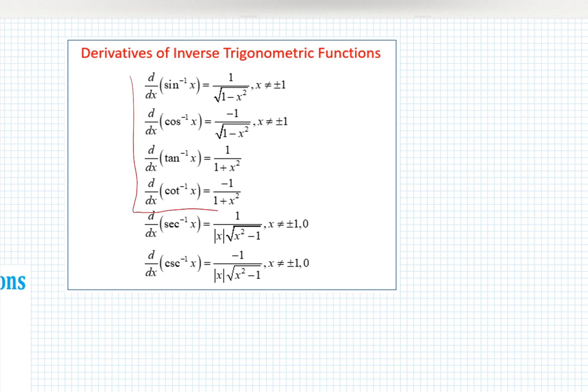We actually require you to remember only the first four: arcsine, arccosine, arctangent and arccotangent. The other two will show up later in calculus 2 class when we're gonna start integrating stuff.